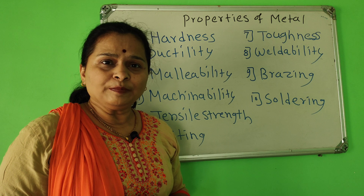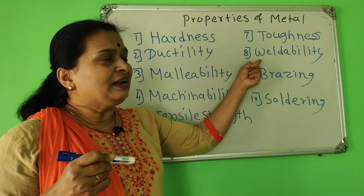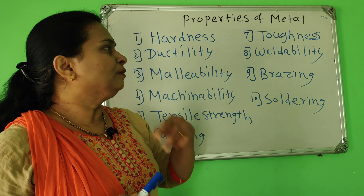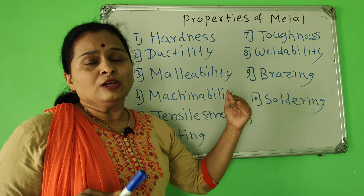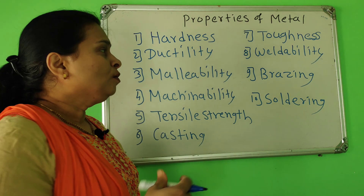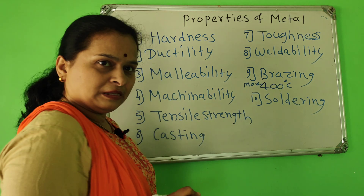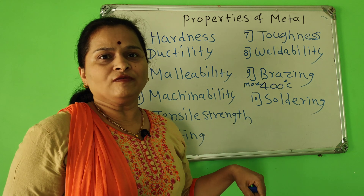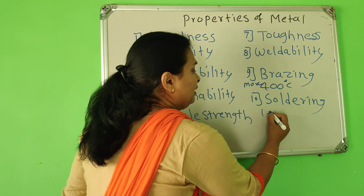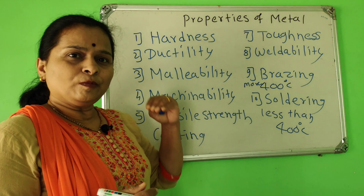Weldability means heating two different metal pieces and joining them — it is known as welding property. For example, iron, gold, silver have welding properties. Then brazing means joining metal surfaces by introducing a non-ferrous alloy with a melting point more than 400°C. While soldering is also joining metal surfaces by introducing a non-ferrous alloy with a melting point less than 400°C. These are the properties of metal.